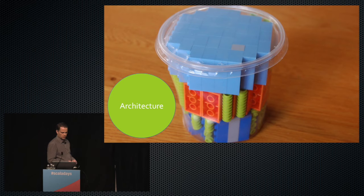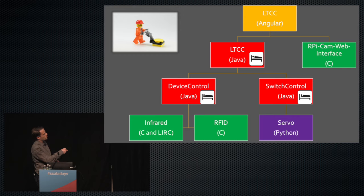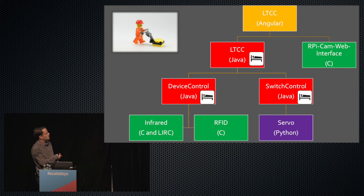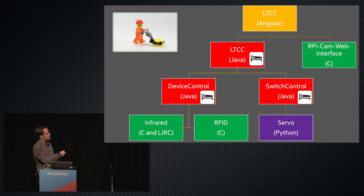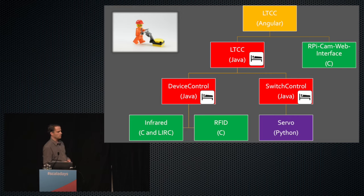Architecture-wise, we started with what I find it difficult to mention — we used Java. We built an application with an Angular front-end; LTCC stands for Lego Train Control Center, a really innovative name. We had a Java back-end running on my laptop, connected to device control running on the Raspberry Pi on the trains or Ferris wheels, plus a switch control. Communication went with REST. We used libraries already available — instead of writing our own Java components to access hardware, we used some C or Python code, adjusted it to our needs, and used Java as the integration layer.